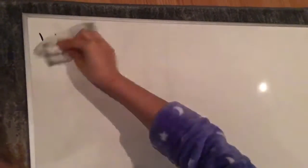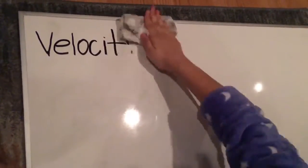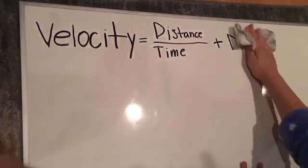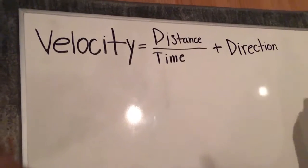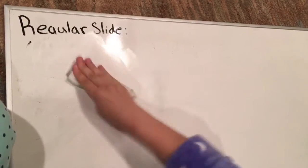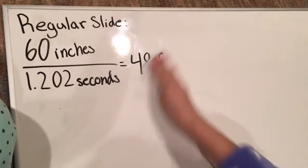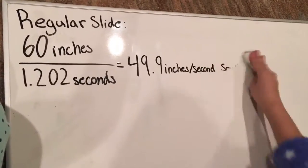Velocity is the speed of something in a given direction. The equation that shows this is distance over time plus direction. Velocity is important to this project because the velocity determines the direction that the tennis ball is going. The equations that are necessary to show this are, for the regular slide, 60 divided by 1.202 equals 49.9 inches per second southwest.